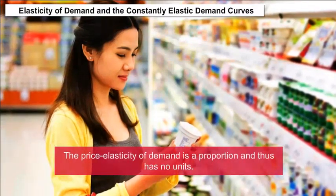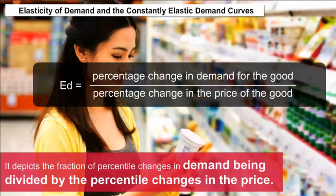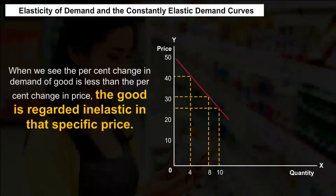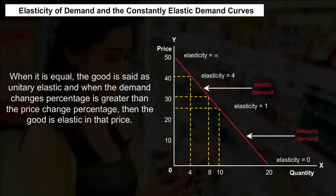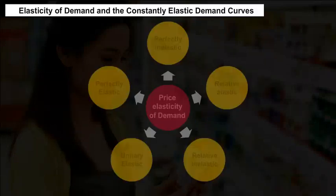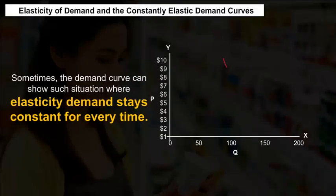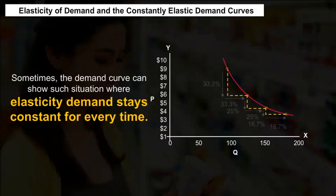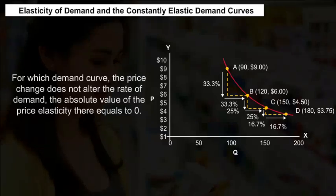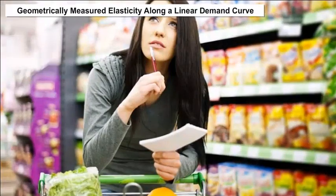Elasticity of demand and constantly elastic demand curves: The price elasticity of demand is a proportion with no units. It depicts the percentage change in demand divided by the percentage change in price. When the percent change in demand is less than the percent change in price, the good is inelastic at that price. When they are equal, the good is unitary elastic. When the demand change percentage is greater than the price change percentage, the good is elastic. The vertical demand curve becomes absolutely inelastic, where the absolute value of price elasticity equals zero.